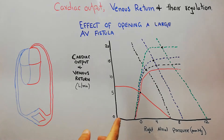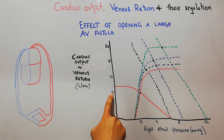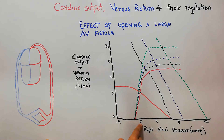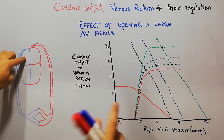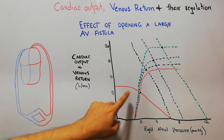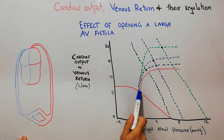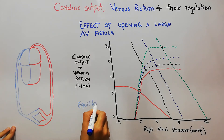Initially when the right atrial pressure is below zero there is no cardiac output. When the right atrial pressure starts increasing, at zero the cardiac output reaches its normal level of five liters per minute. The venous return also starts increasing, and at zero millimeter of mercury right atrial pressure, both the cardiac output and the venous return are five liters per minute. This point is known as the equilibrium point.